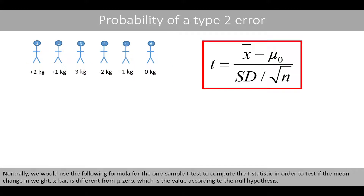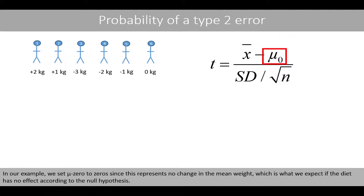Normally, we would use the following formula for the one-sample t-test to compute the t-statistic in order to test if the mean change in weight, x-bar, is different from mu0, which is the value according to the null hypothesis. In our example, we set mu0 to 0, since this represents no change in the mean weight, which is what we expect if the diet has no effect according to the null hypothesis.